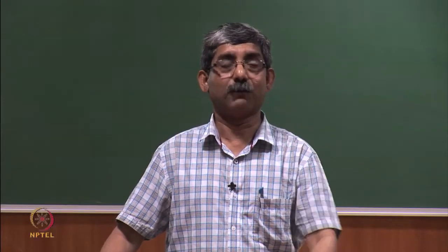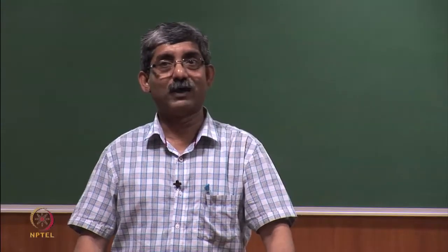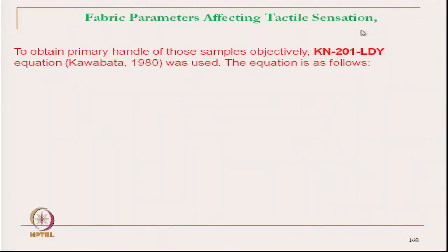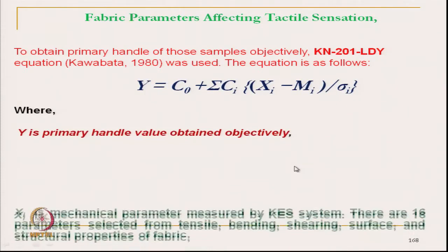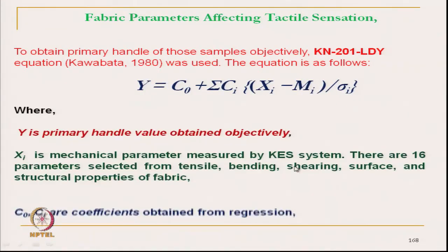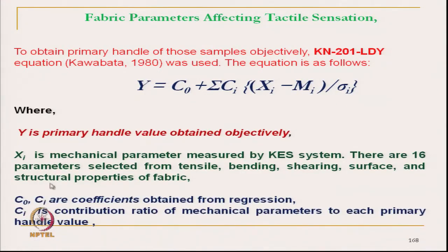The primary hand value was obtained using the equation already discussed earlier. These are the primary hand values with the contribution ratio Ci.